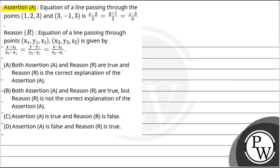Assertion is given that the equation of a line passing through the points (1, 2, 3) and (3, -1, 3) is: x minus 3 divided by 2 is equal to y plus 1 divided by 3, is equal to z minus 3 divided by 0.